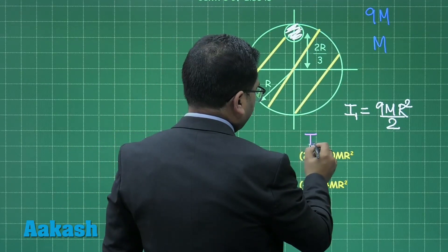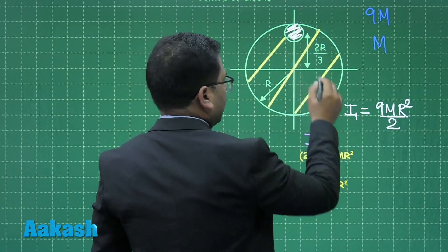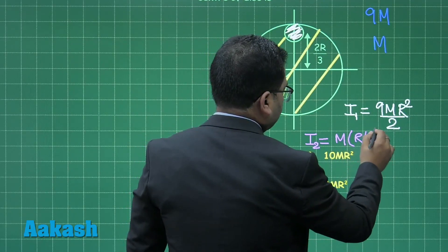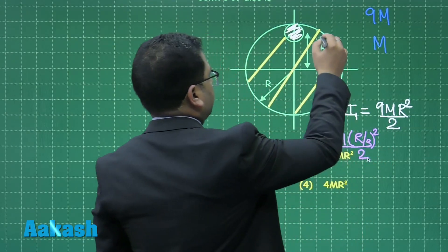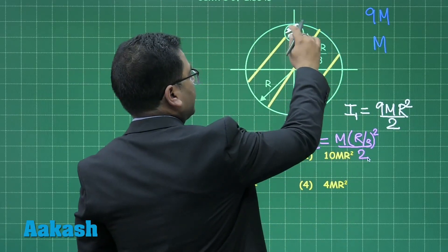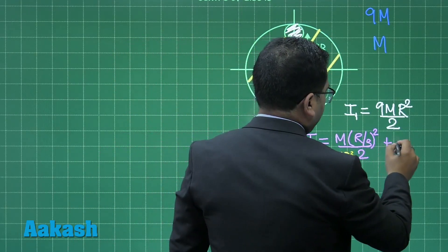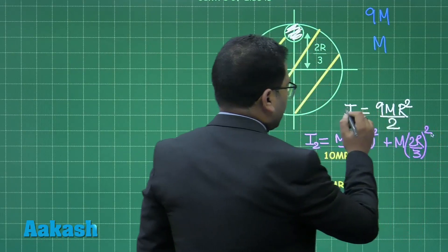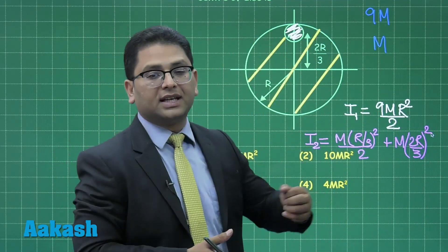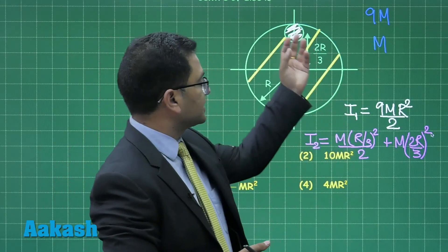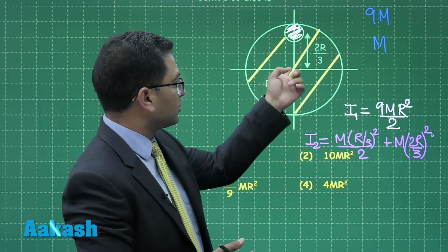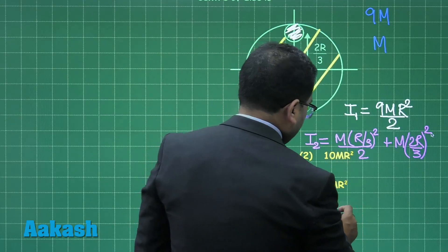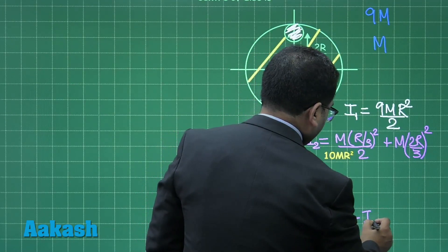For the removed disc, I2 is calculated about the same axis using the parallel axis theorem: I2 = m(R/3)²/2 + m(2R/3)². The net moment of inertia is I1 minus I2.